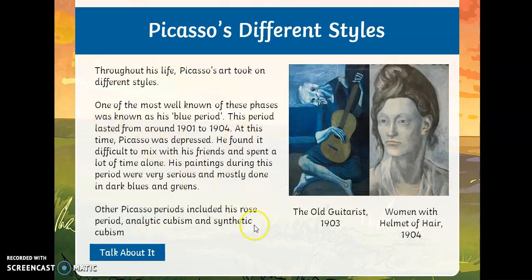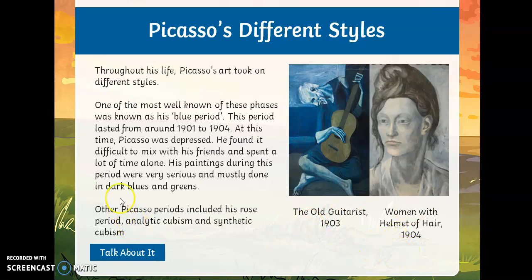Throughout his life, Picasso also used lots of different styles. One of the most well-known of these phases was his blue period, from about 1901 to 1904. He was depressed, found it difficult to mix with his friends, and spent a lot of time alone. So his paintings were quite miserable from that time — all about showing how he felt, using colours that show sadness like dark blues and greens. He had other periods too, including his rose period, analytic cubism, and synthetic cubism.